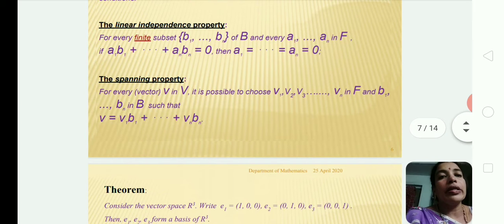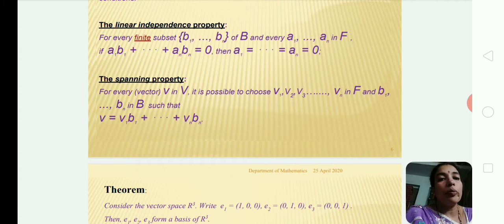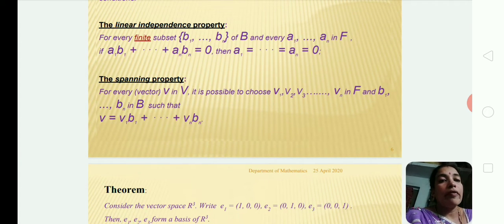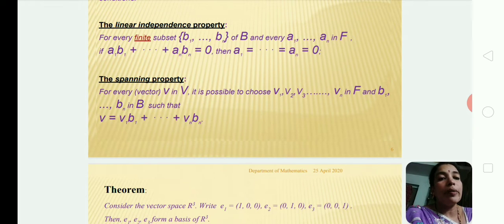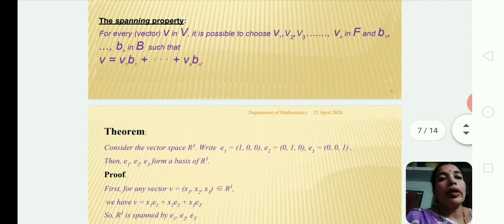Linear independence property: for every finite subset {v1, v2, ..., vn} and scalars a1, a2, ..., an in F, if a1*v1 + a2*v2 + ... + an*vn = 0 implies a1 = 0, a2 = 0, ..., an = 0, this is the linear independence property. The spanning property: for every vector v in V, it is possible to choose scalars v1, v2, ..., vn in F and vectors in the basis such that v = v1*b1 + v2*b2 + ... + vn*bn.